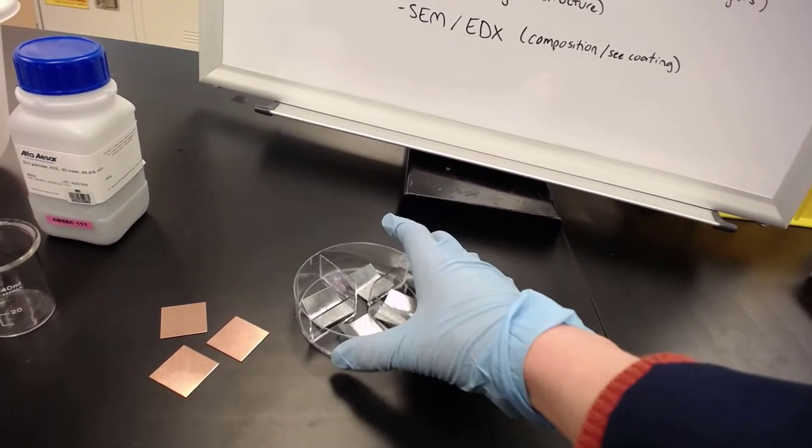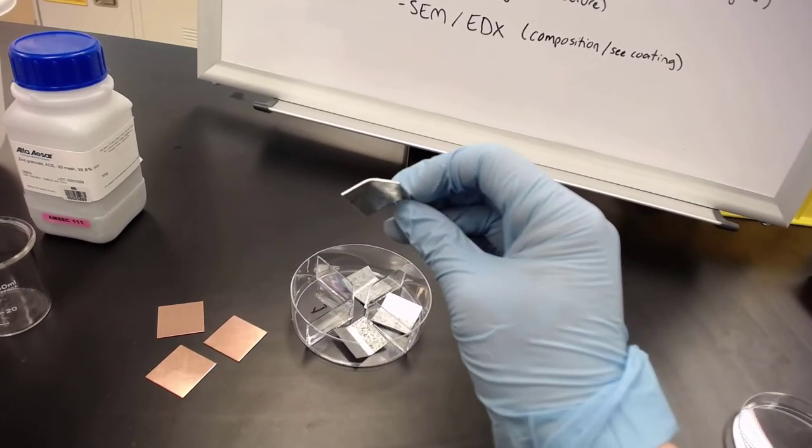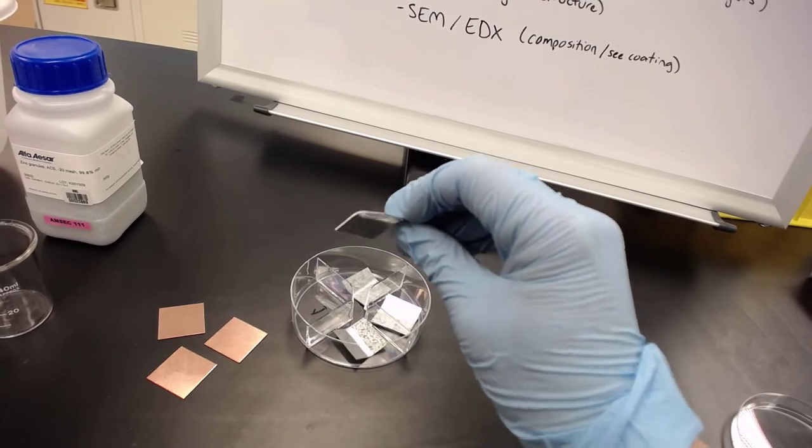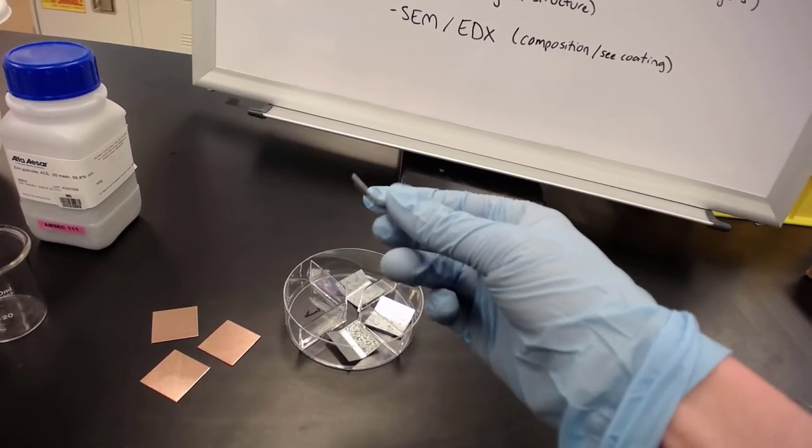We've already bent our samples into a V-shape to help when we're putting them in the HCL to remove the coating. This helps the bubbles escape from underneath.